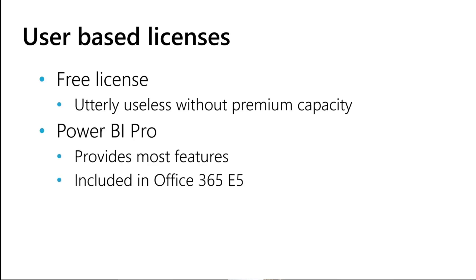Next we have Power BI Pro. This is the default option. It provides most of the features that you might ever need. It can also be included in Office 365 E5, which is a level higher than most people are going to have. Most folks are going to have the E3 level, but it's about $10 per user per month, and it's the most common solution.